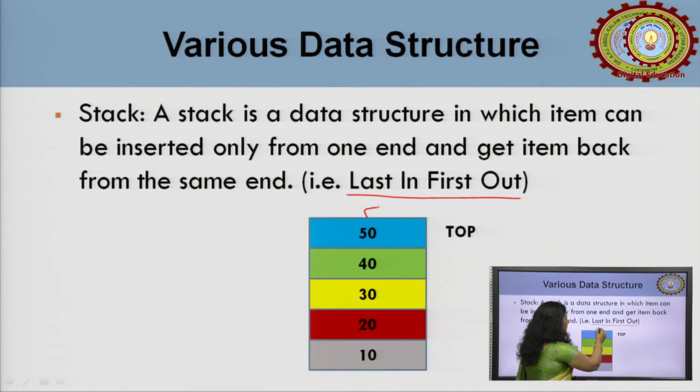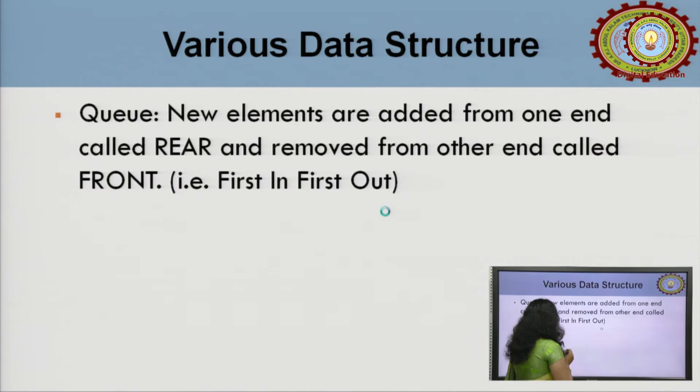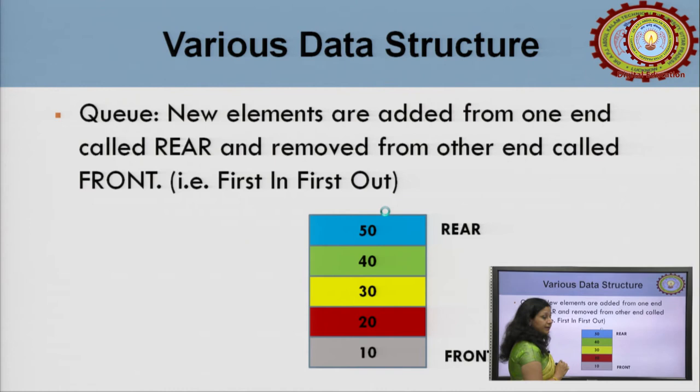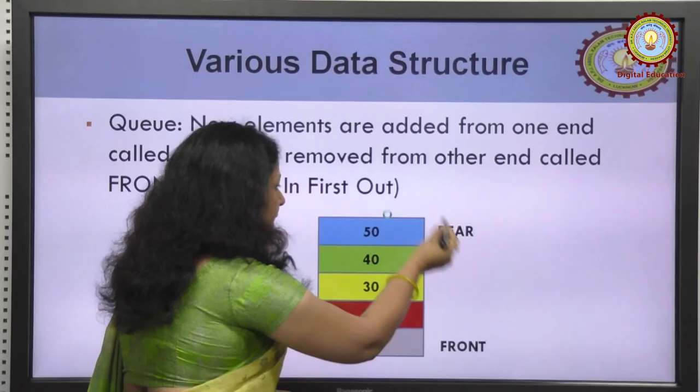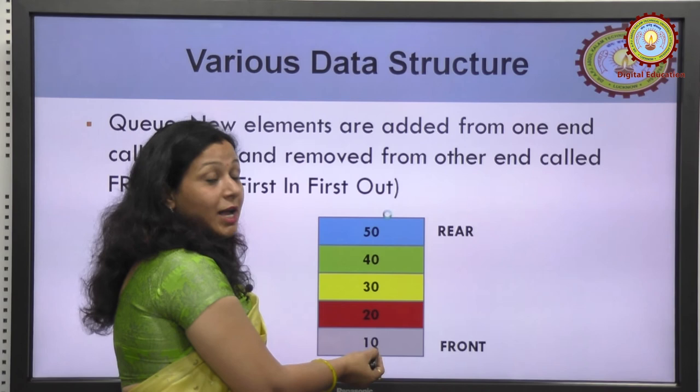Then queue — also a variation of the array. Just as stack works on LIFO, queue works on First In First Out (FIFO). If an item is to be inserted, it is inserted from the rear end. If deletion is to happen, the item that was inserted first is deleted first. So insertion always happens from the rear end and deletion always happens from the front end. This is about the queue.